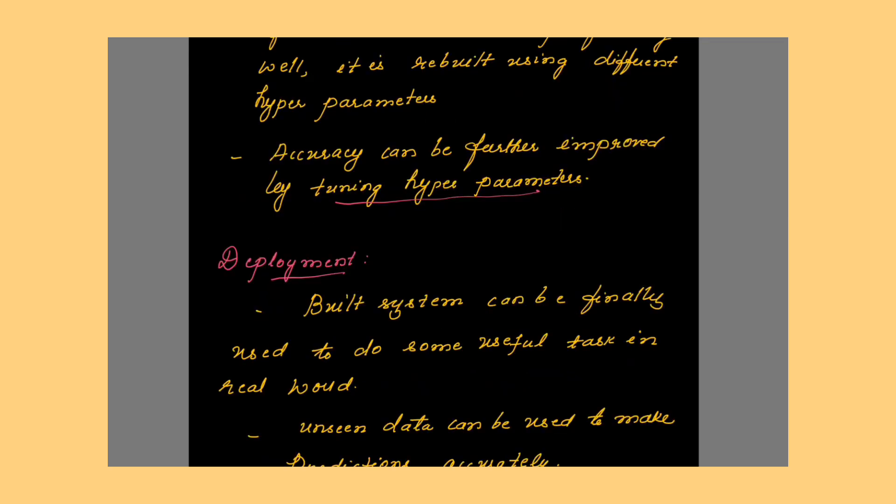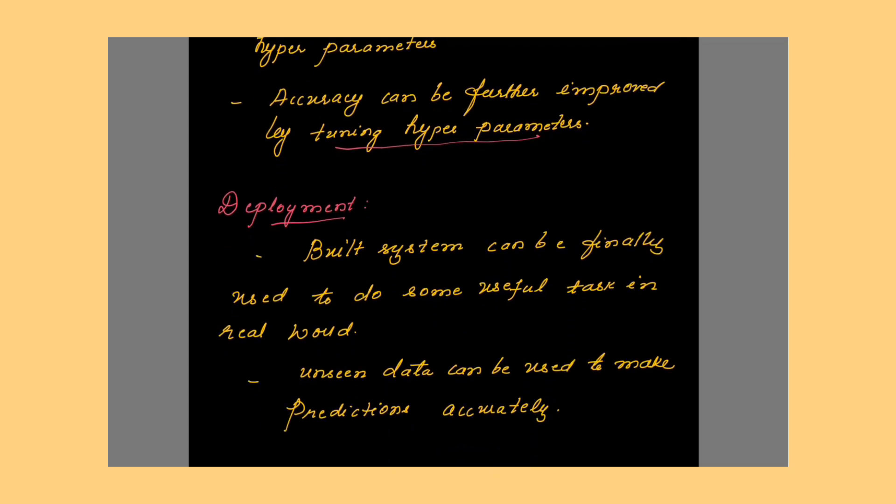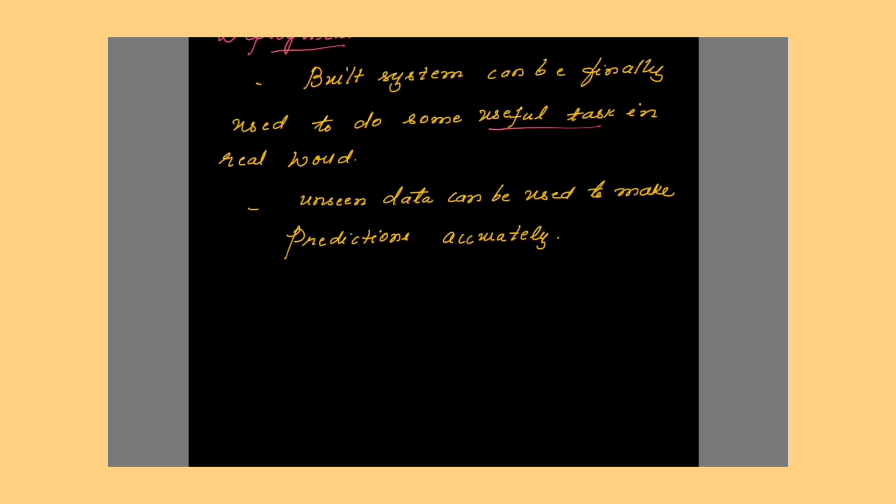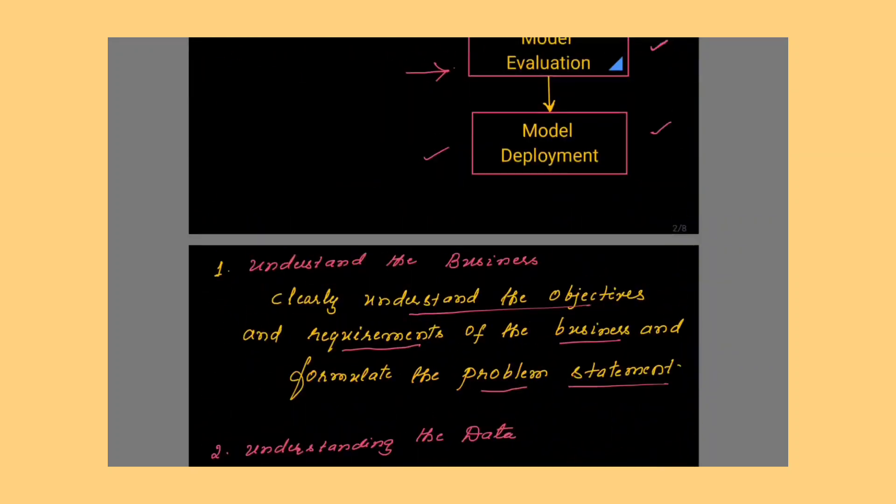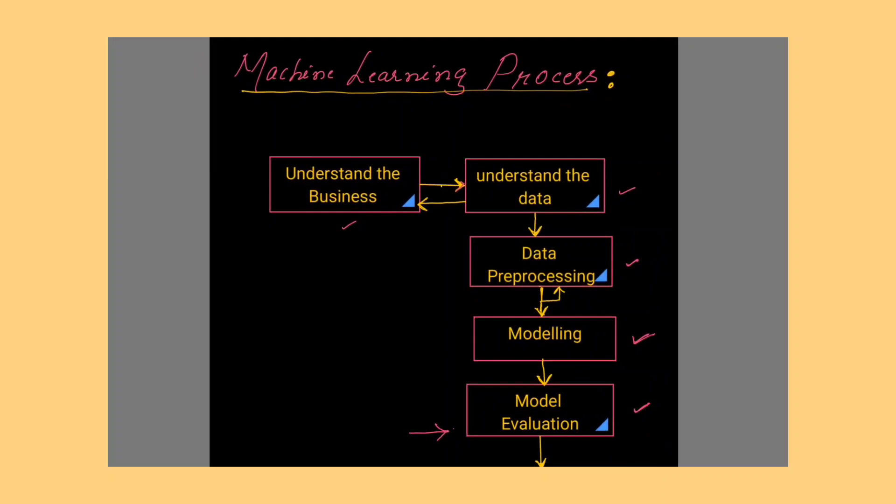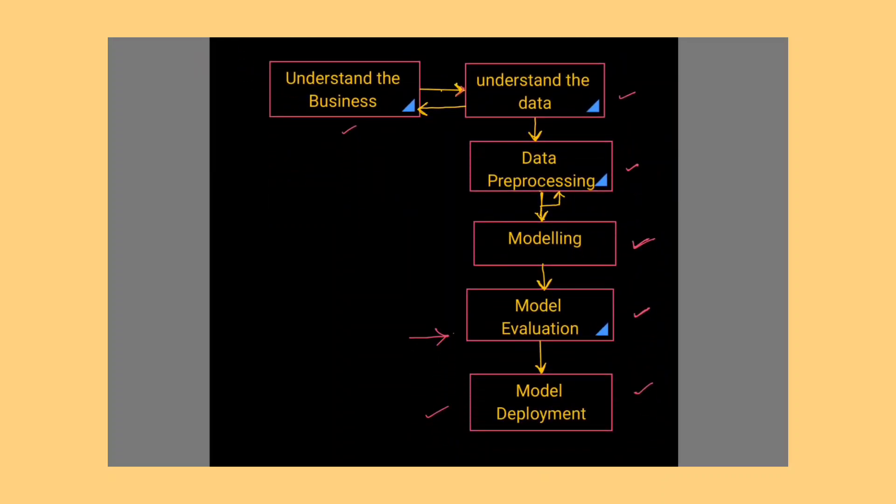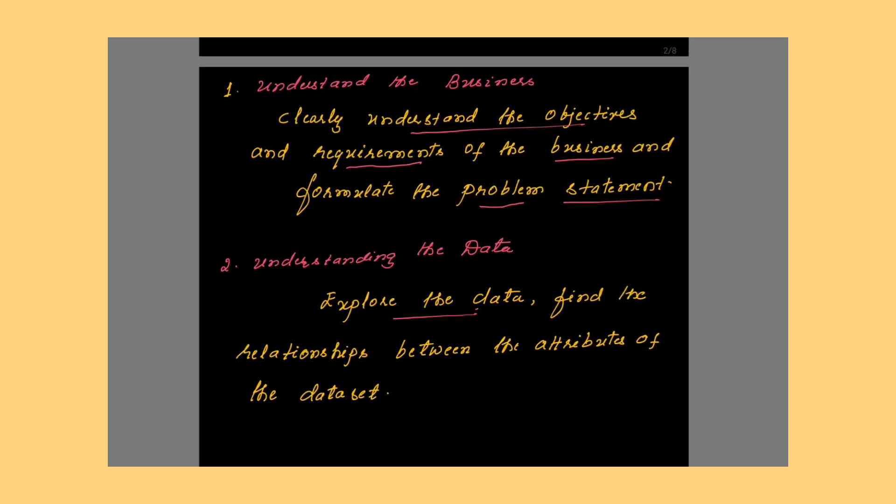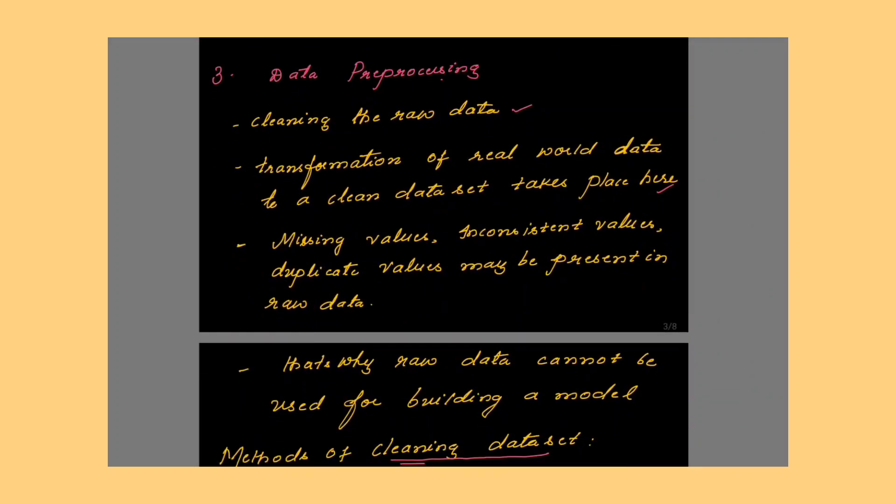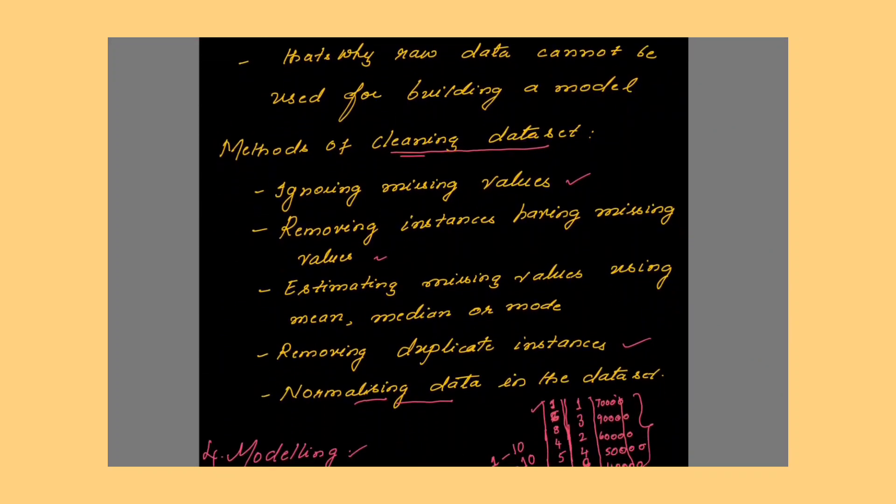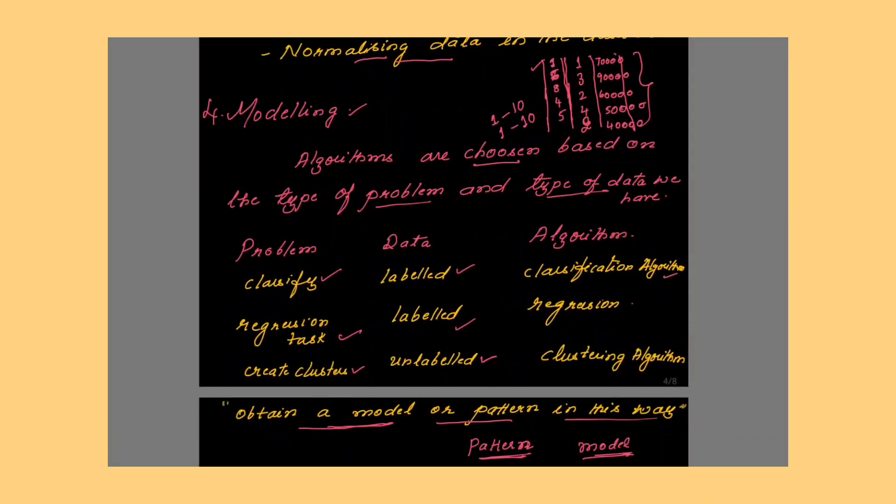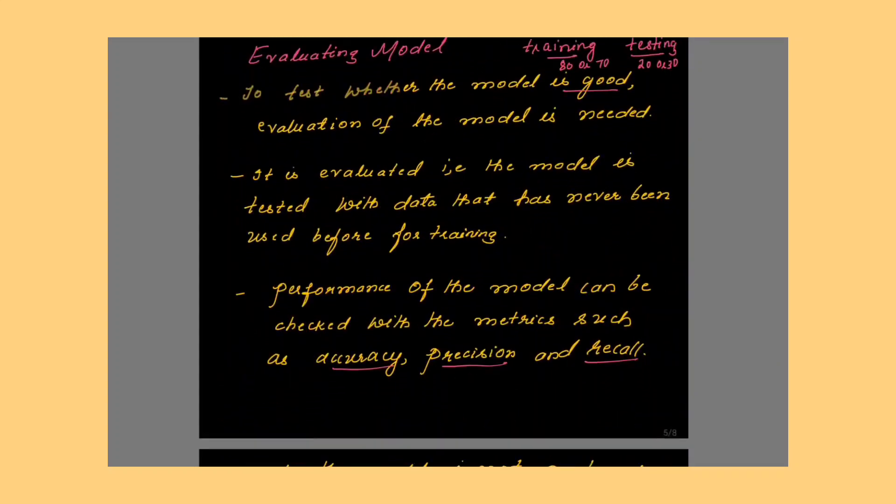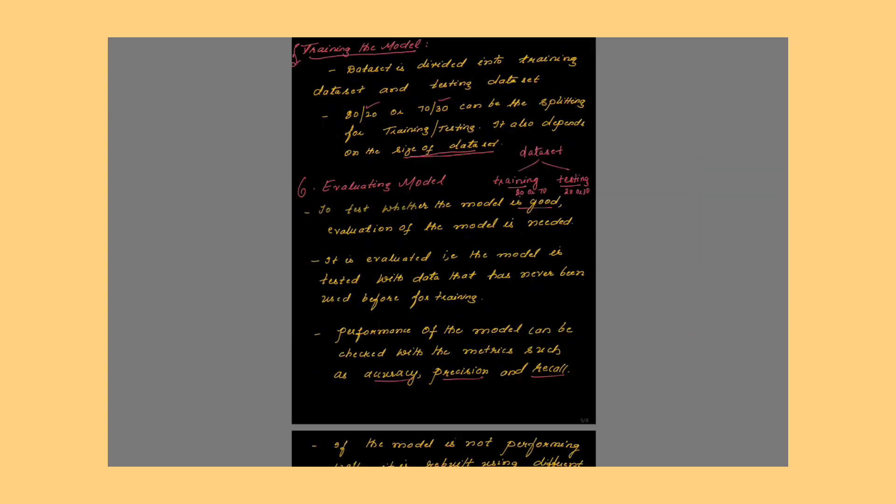The last stage here will be the deployment. The deployment is you have built the model now, then finally it can be used to perform the task which you have formulated in the problem statement and unseen data can be used to make the predictions accurately. These are the different stages. This is the diagram for the machine learning process. You have to remember in this block diagram the different stages and here you have a bidirectional arrow between understanding business and understanding the data, as well between data preprocessing and modeling. This completes the different stages in the machine learning process.